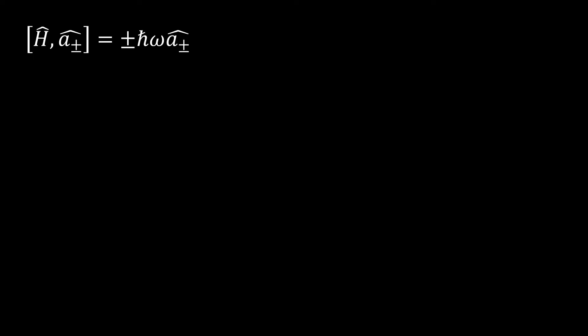Part d is probably the trickiest because now we're dealing with the Hamiltonian operator and raising and lowering operators. The plus and minus notation is a bit tricky, so we're going to assume two different cases: first the raising operator, then the lowering operator. Let's start with the raising operator case: the commutator [H-hat, a-hat plus]. We can expand this out.